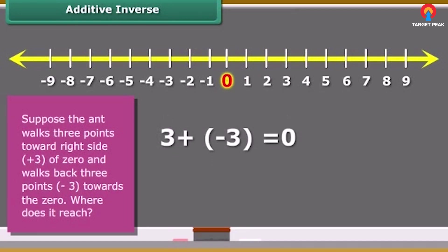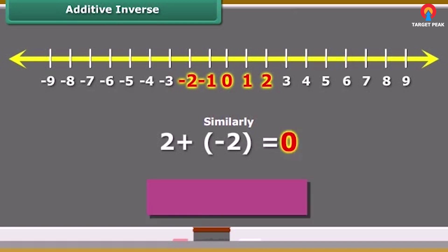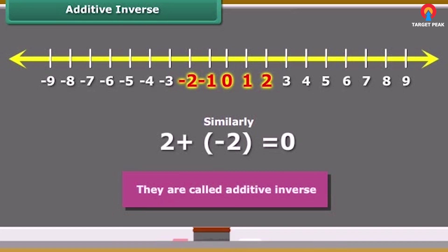You can see that it will reach to zero. We add two and minus two, we obtain the sum as zero. Numbers such as three and minus three, two and minus two, when added to each other give the sum zero. They are called additive inverse.